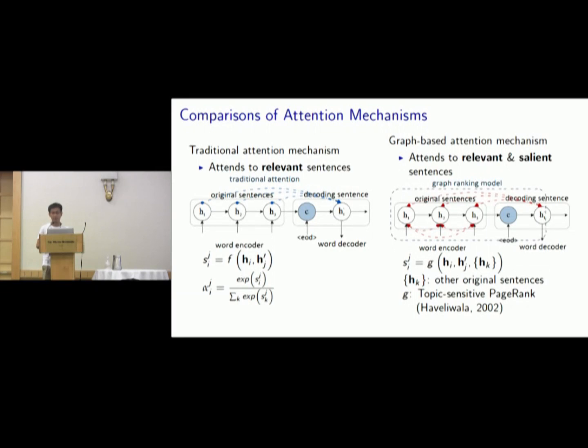Instead, in our graph-based attention mechanism, we hope to attend to original sentences that are both relevant and salient. So we achieve this by replacing the traditional attention function into a graph-based graph ranking model. The score of an original sentence is computed based on not only the relationship between the original sentence with the decoding sentence, but also the relationship with other original sentences to identify whether it is salient. We realize this by introducing topic-sensitive PageRank. The decoding sentence is treated as the topic. So the attention score of an original sentence is computed based on ranking value regarding to the decoding sentence.